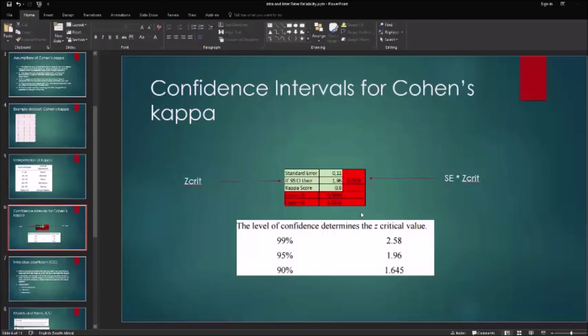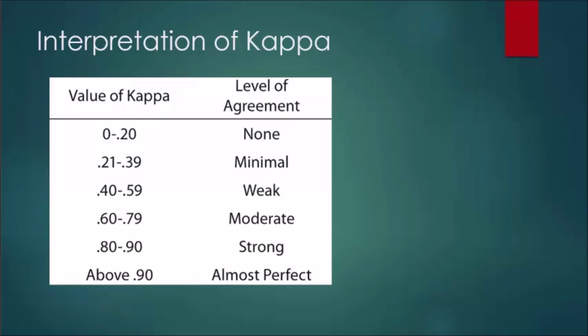To interpret kappa: a value of 0 to 0.20 is no agreement; 0.21 to 0.39 is minimal agreement; 0.40 to 0.59 is weak agreement; 0.60 to 0.79 is moderate agreement; 0.80 to 0.90 is strong agreement; and above 0.90 is almost perfect agreement, while a kappa of 1 would be a perfect level of agreement.